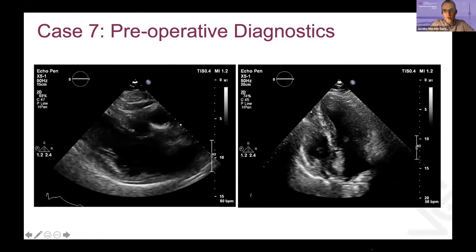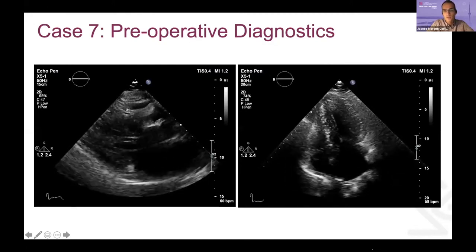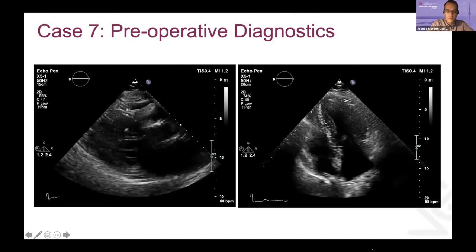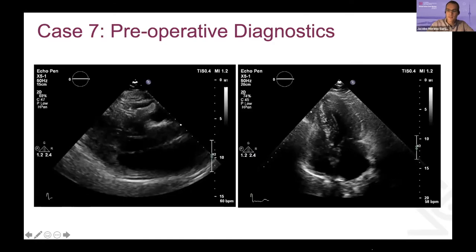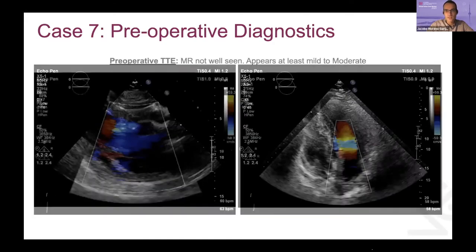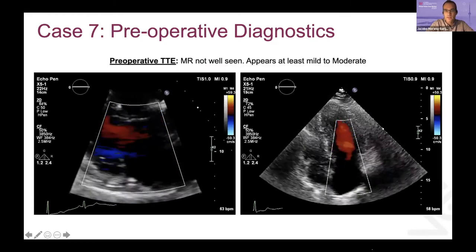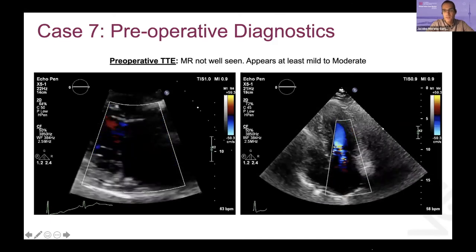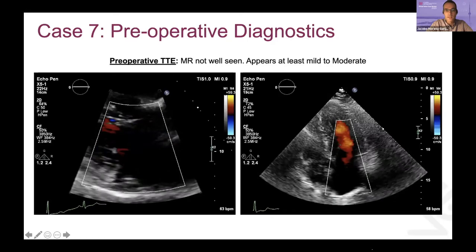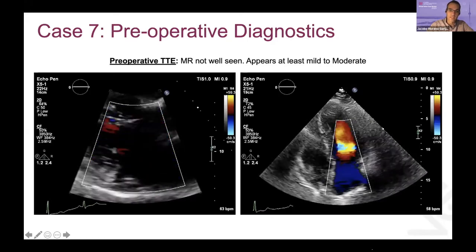Here are a couple of images from the preoperative transthoracic echo. We clearly see the hypertrophy on both views. But when the time arrives to actually assess the mitral regurgitation, what we mostly see is that the MR is not well-seen — it appears to be at least mild to moderate. That's what we start with, and then the patient arrives to the OR and we do our assessment.